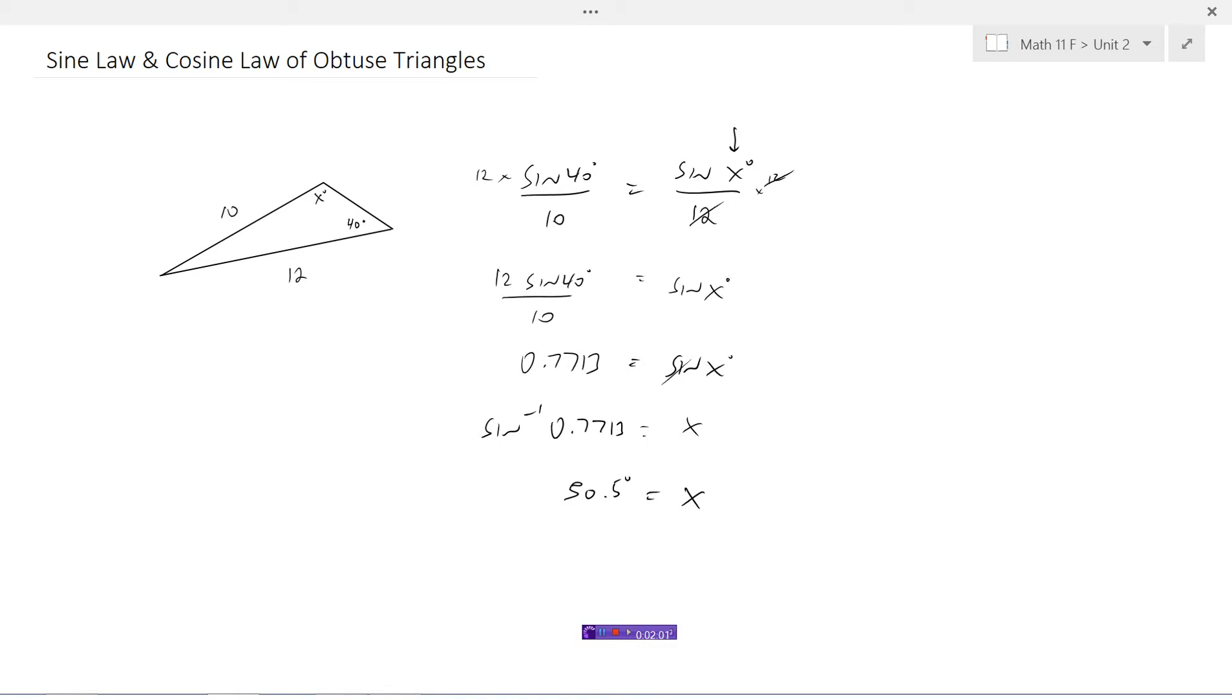Now what we have to keep in mind here, this is not going to be the answer. The calculator doesn't know when you give it a ratio of 0.7713, it doesn't know if you want the acute angle, that is the angle less than 90 degrees, or if you want the obtuse one. Remember this identity from earlier, that sine theta is the same thing as sine 180 minus theta. So the acute angle is going to have the exact same ratio as the supplementary angle.